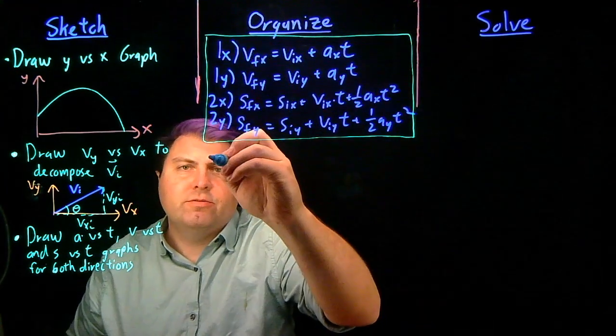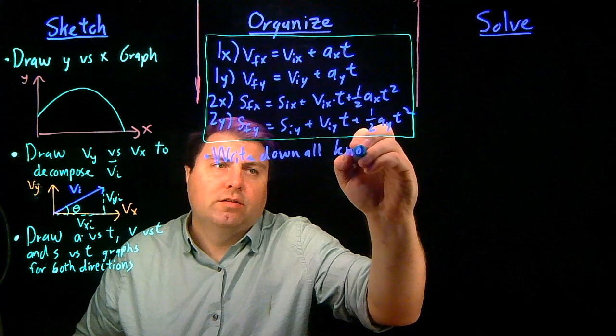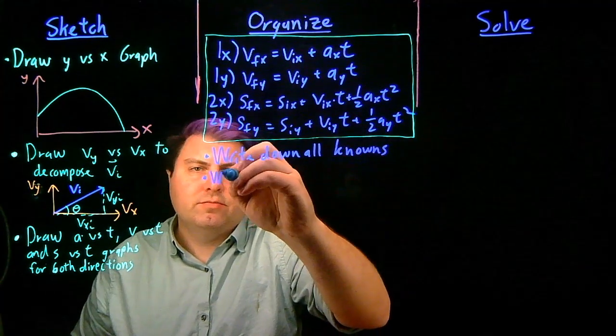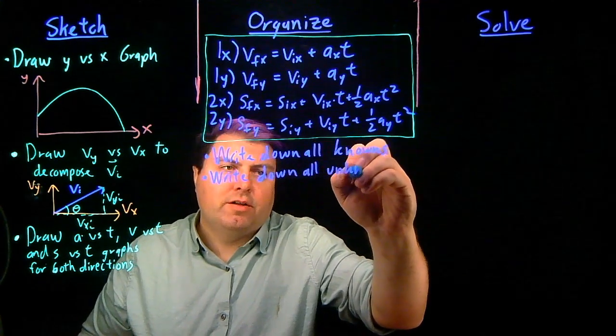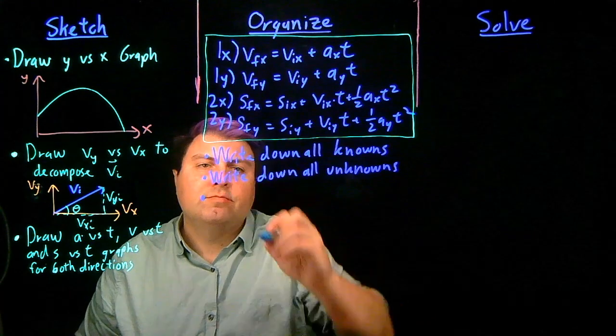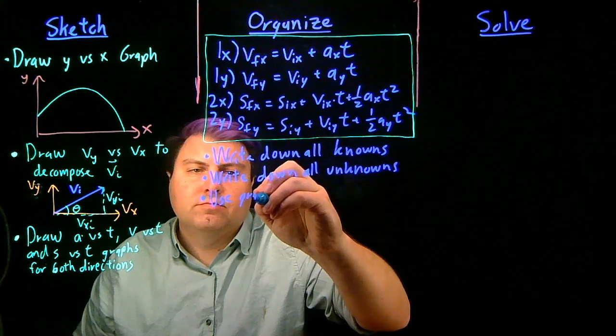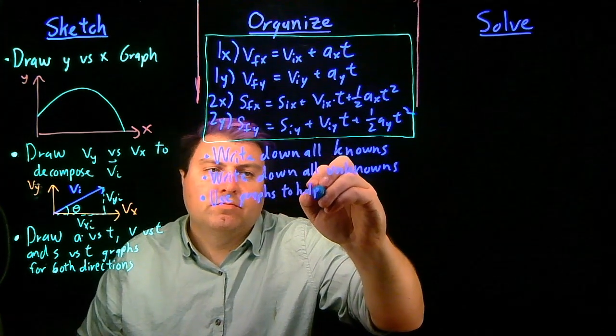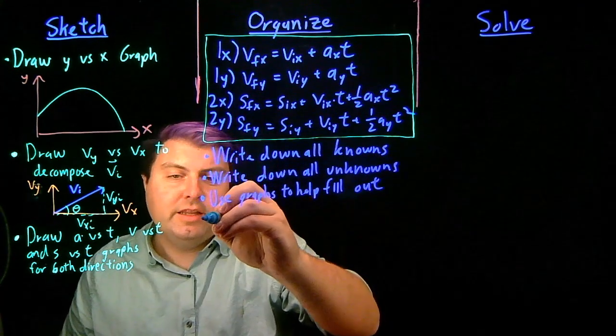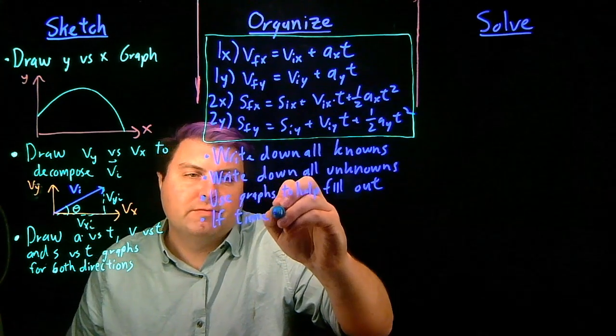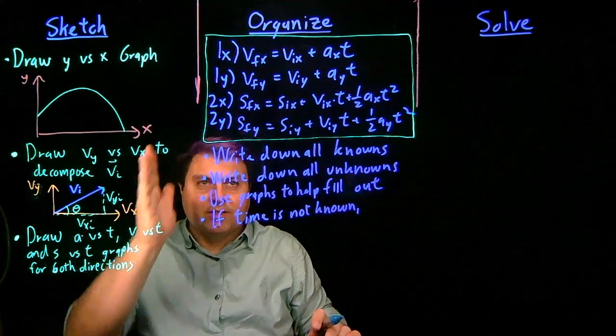Once we have that, we want to write down all of our knowns, write down all unknowns. And we want to use these graphs to help fill out our knowns and unknowns.